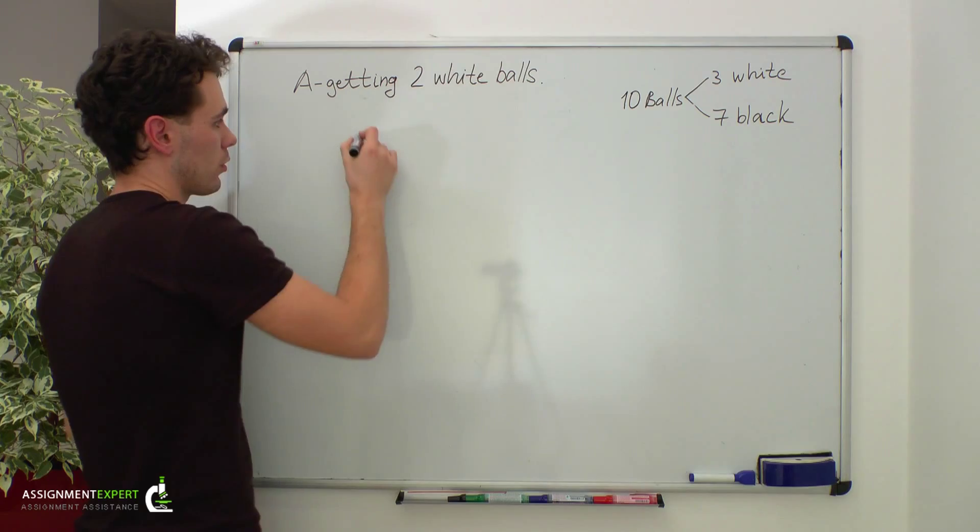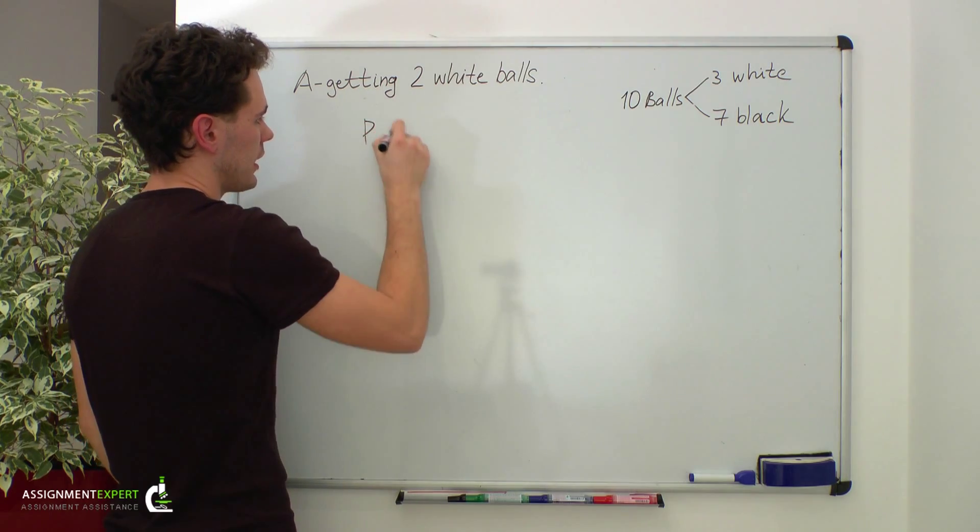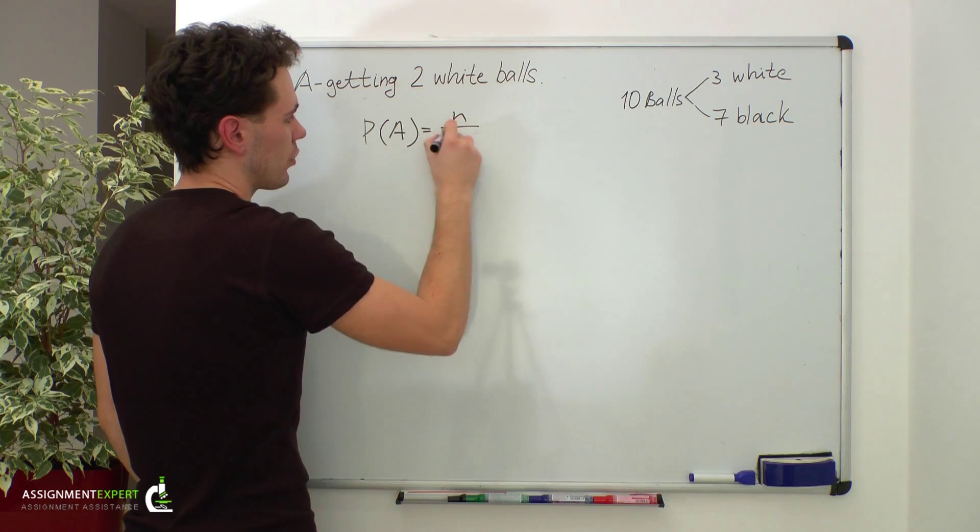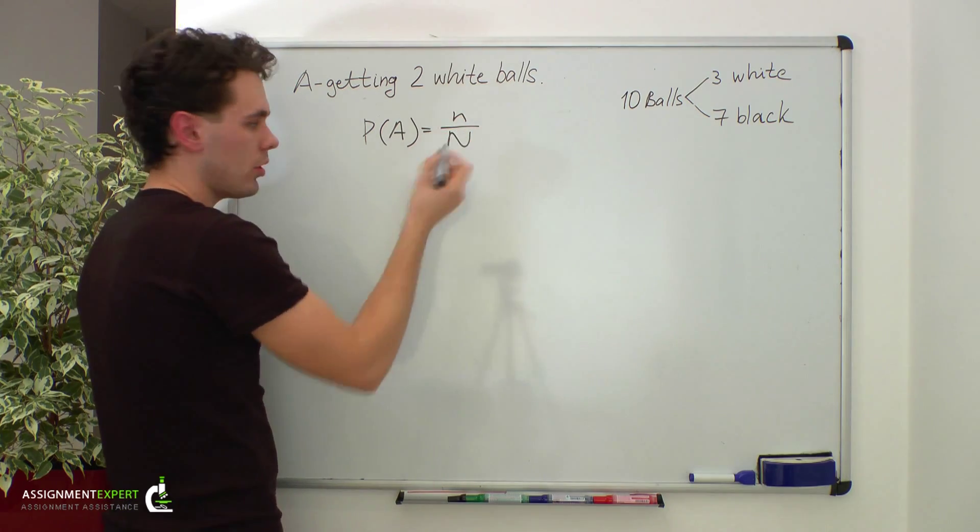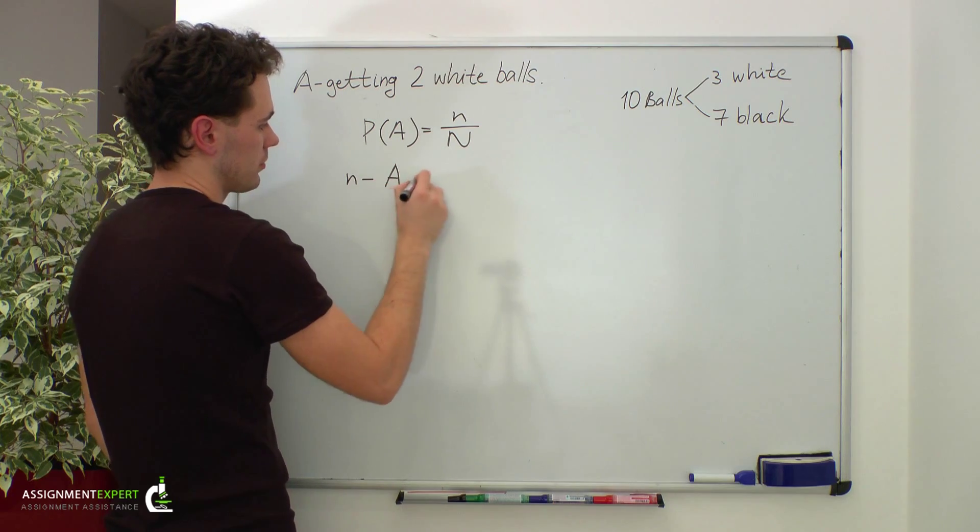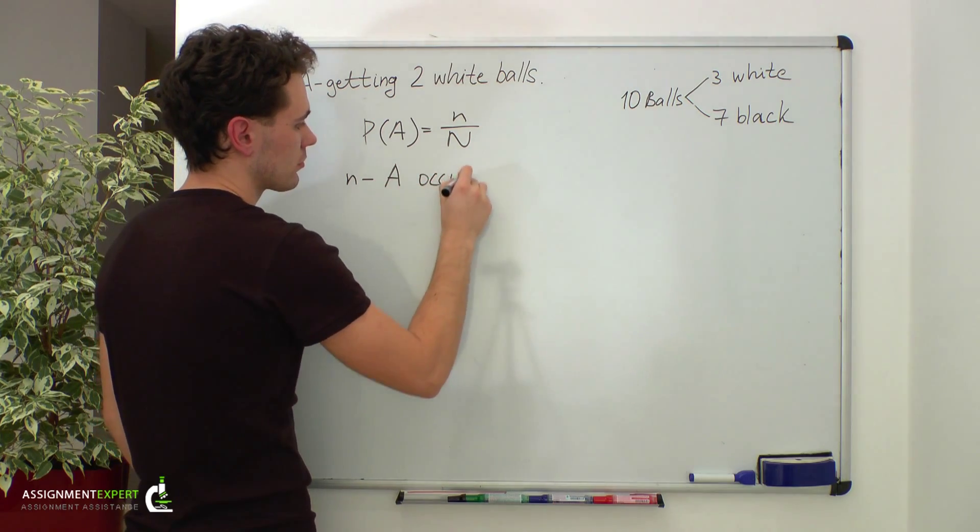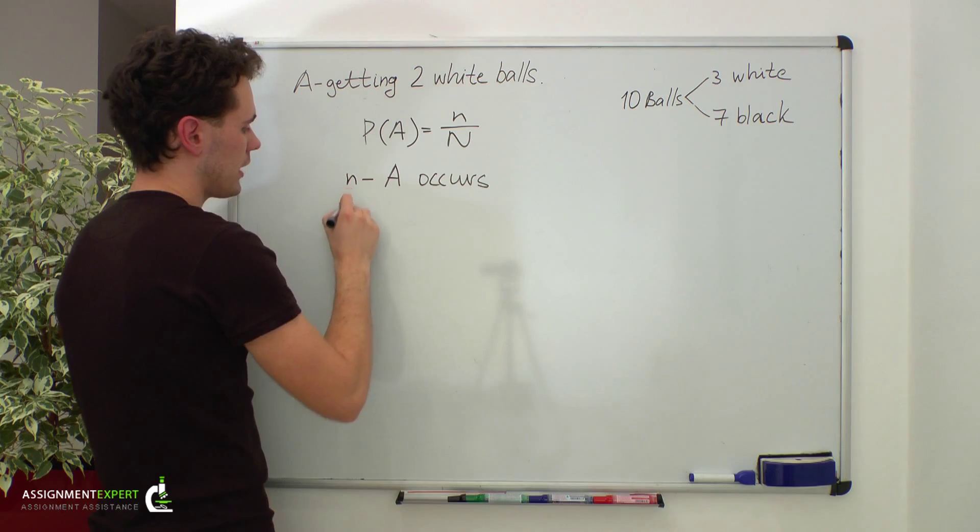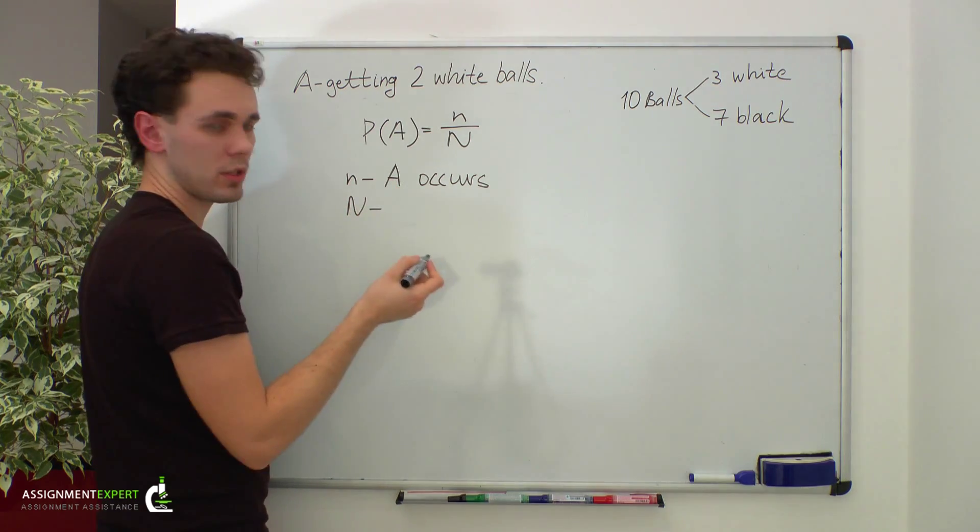The formula is as follows: The probability of event A equals small n over capital N. Small n stands for the number of outcomes when event A occurs, and capital N is the number of all possible outcomes.